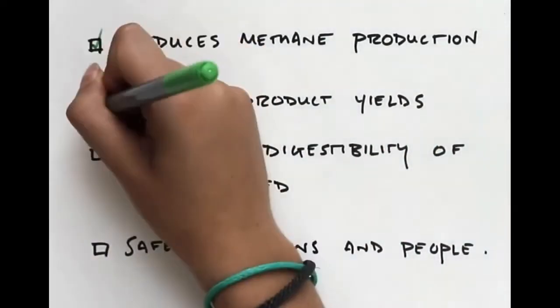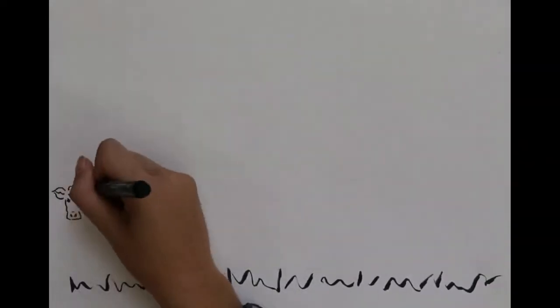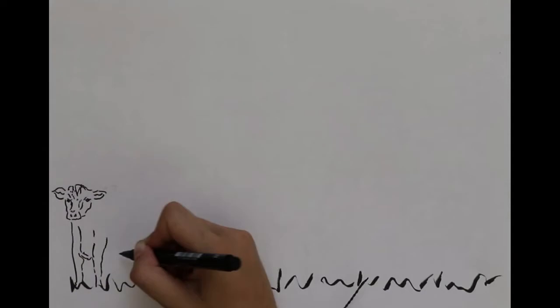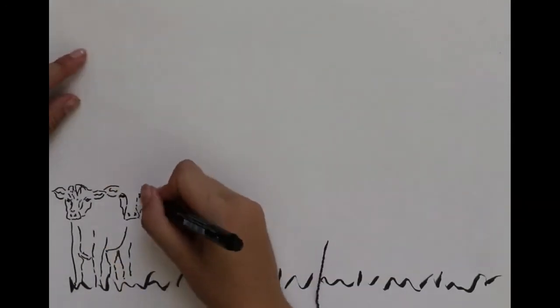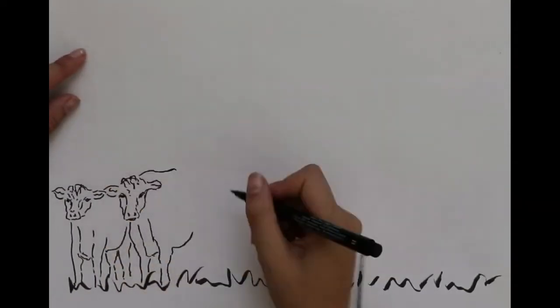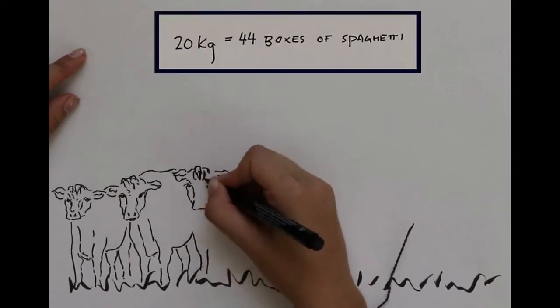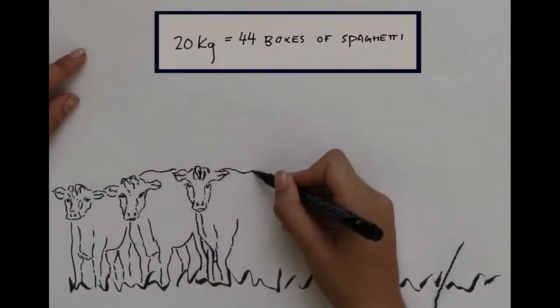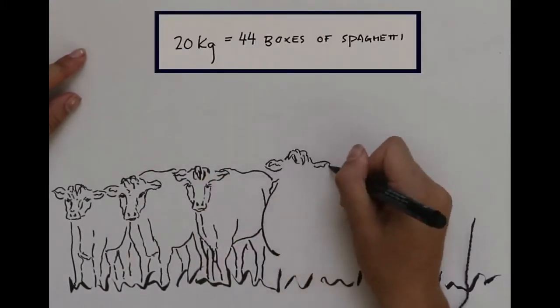It seems great, but here's the catch. Will it be possible to produce enough algae to feed lots of cows? The average cow can eat more than 20 kilos of dried plants and grain, or about 44 boxes of dry spaghetti every day. And there are about 93 million cows in the United States.